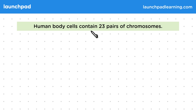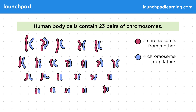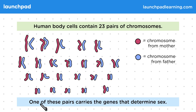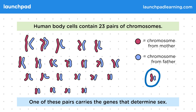Human body cells contain 23 pairs of chromosomes. 22 of these pairs control characteristics, and one of these pairs carries the genes that determine sex. The 23rd pair of chromosomes controls sex characteristics, like whether you have testes or ovaries.